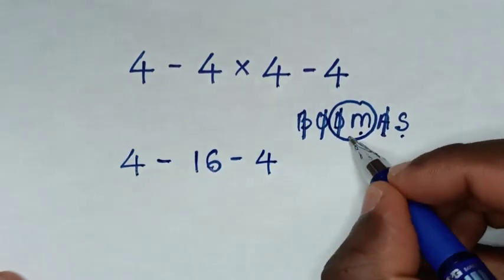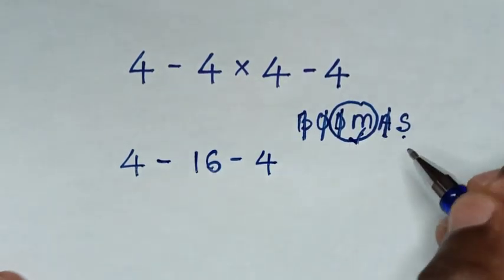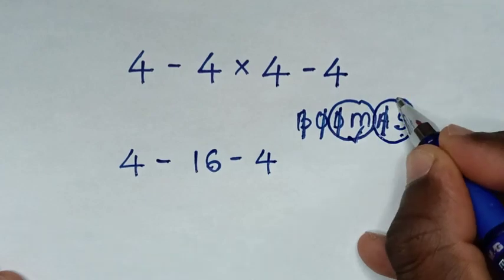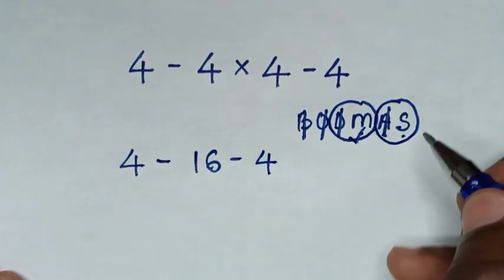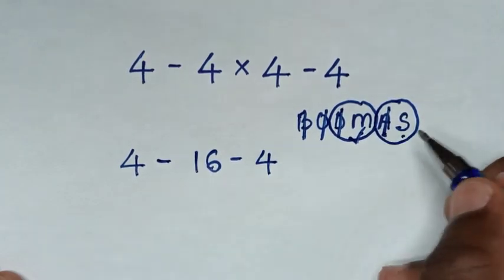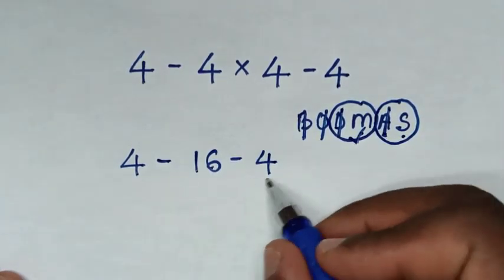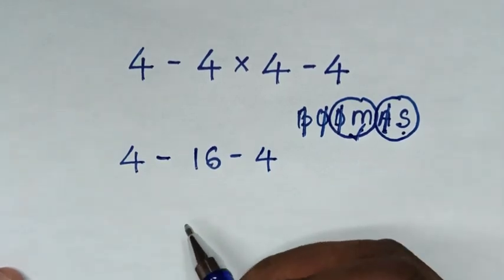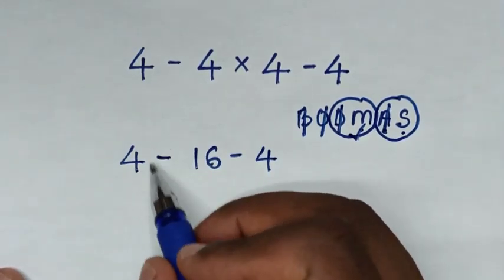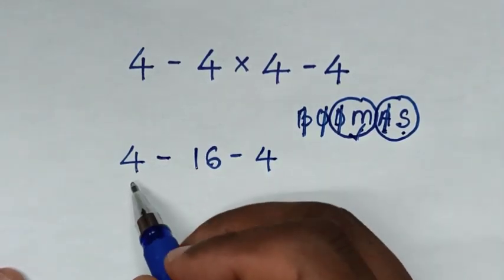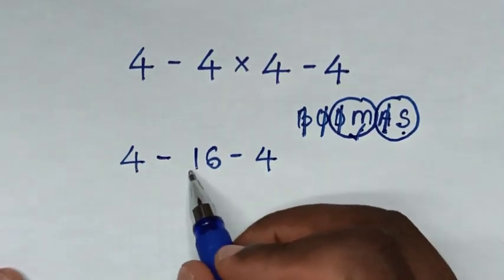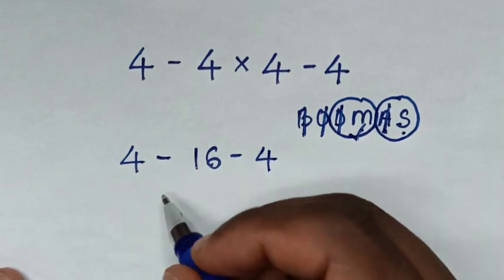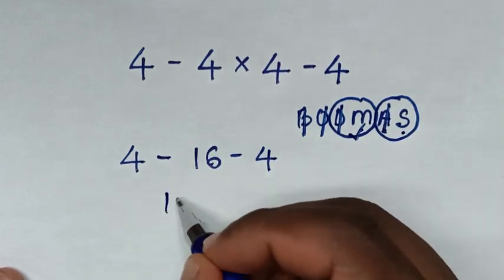Then after we deal with this multiplication, we deal with this group of addition and subtraction. Whereas we don't have addition, so we deal with these subtractions. Now we'll start with this first subtraction of 4 minus 16, which gives 12.